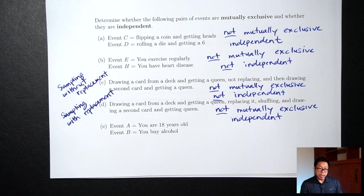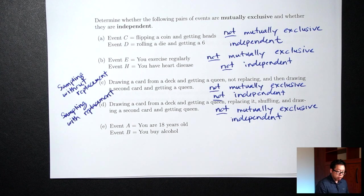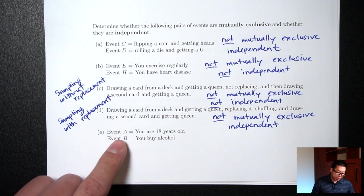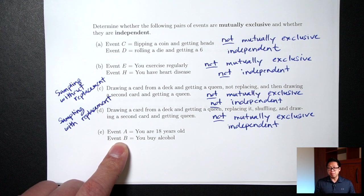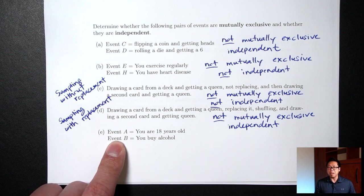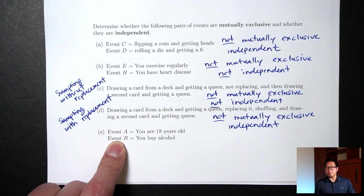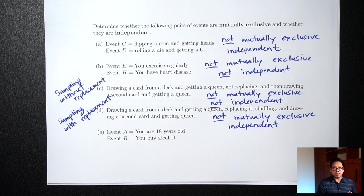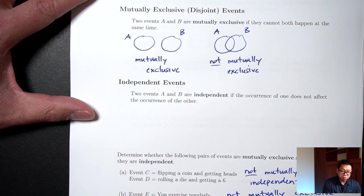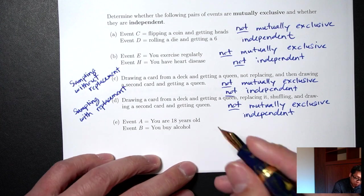Part E: Event A is you are 18 years old. Event B is you buy alcohol. Are these two things mutually exclusive? Can you be 18 years old and at the same time buy alcohol from a store — legally? No, not in this country. To buy alcohol here, you have to be 21 or over. So these two things cannot both happen at the same time, which means this would be mutually exclusive.